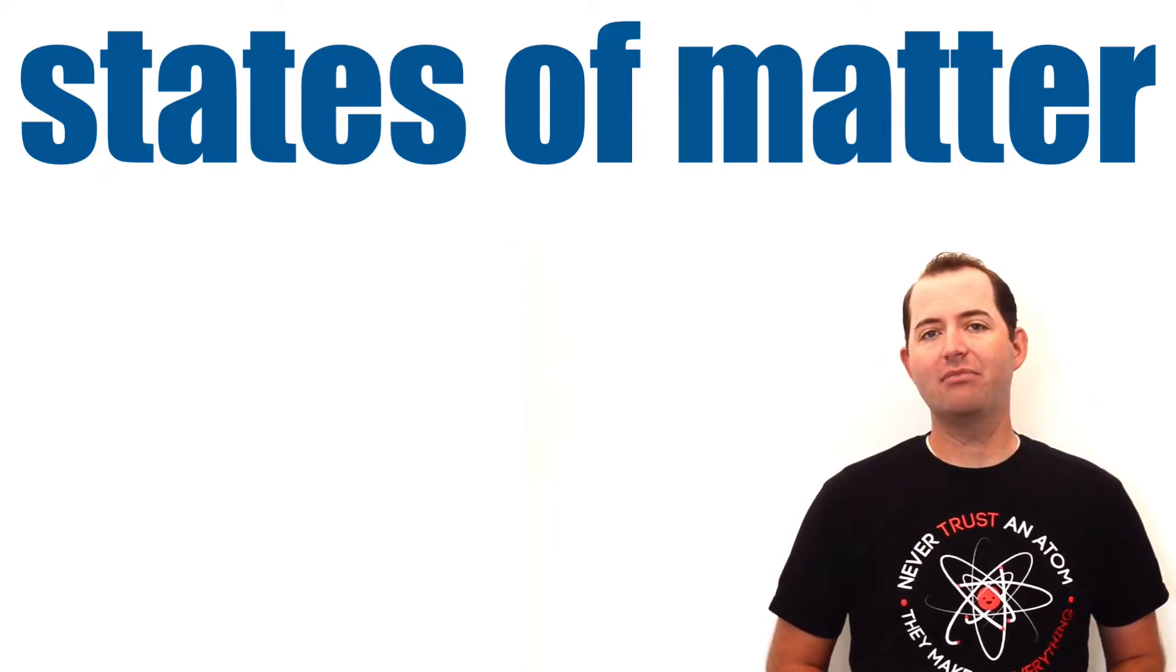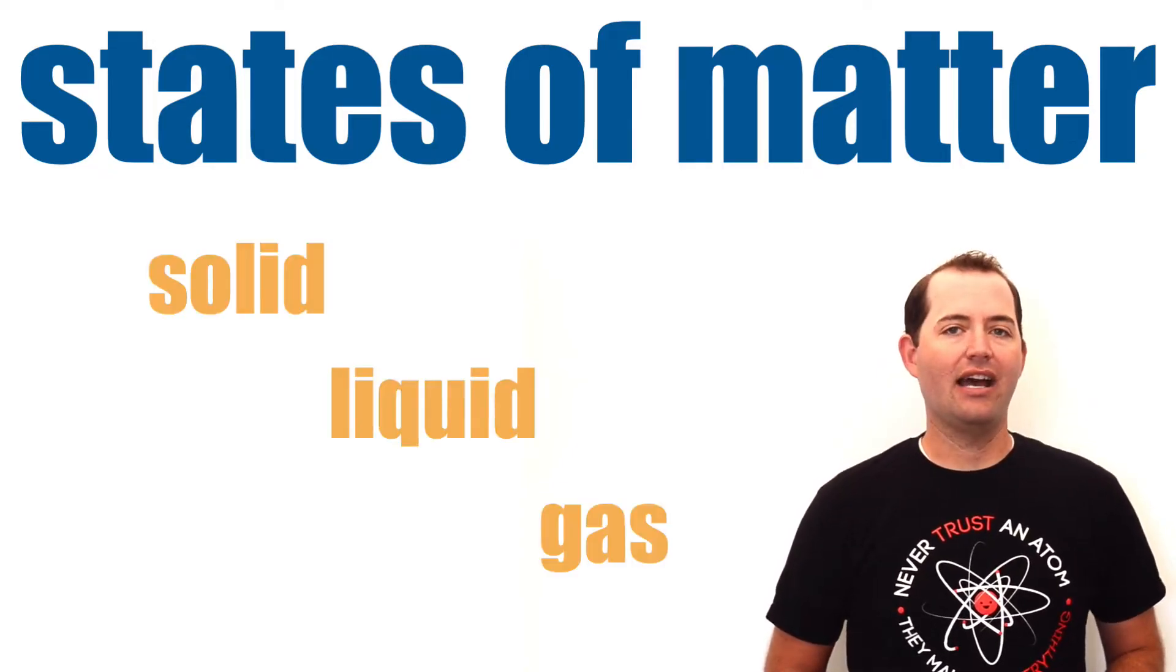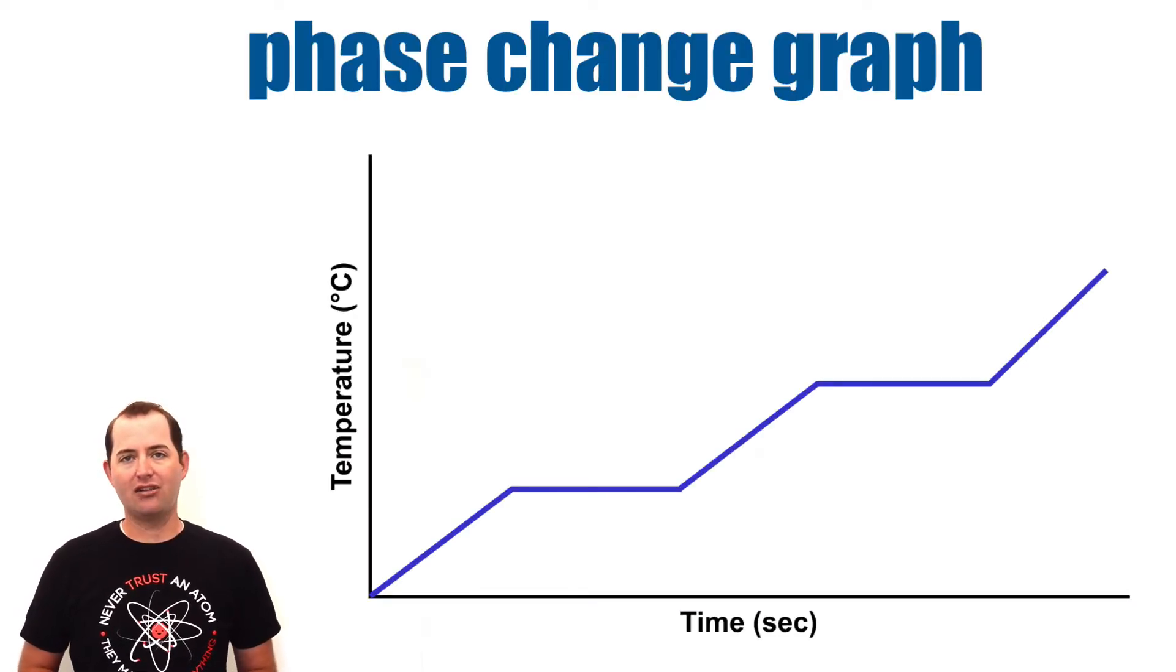There are three common states of matter: solid, liquid, and gas. One way that we commonly present the changes between these states of matter is on a states of matter or phase change graph.